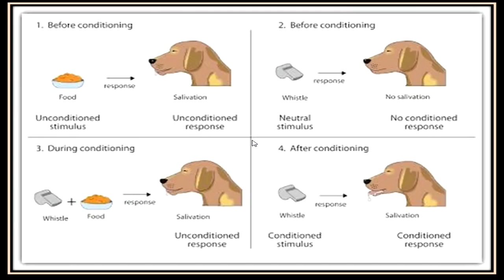Before conditioning, when food was presented — the unconditioned stimulus — the dog salivated, which was the unconditioned response. A bell or whistle was then introduced as a neutral stimulus that led to no salivation. During conditioning, every time the bell rang the food was served, and the dog responded by salivating — the unconditioned response. After the dog was conditioned, ringing the bell alone — the conditioned stimulus — led to a conditioned response of salivation.